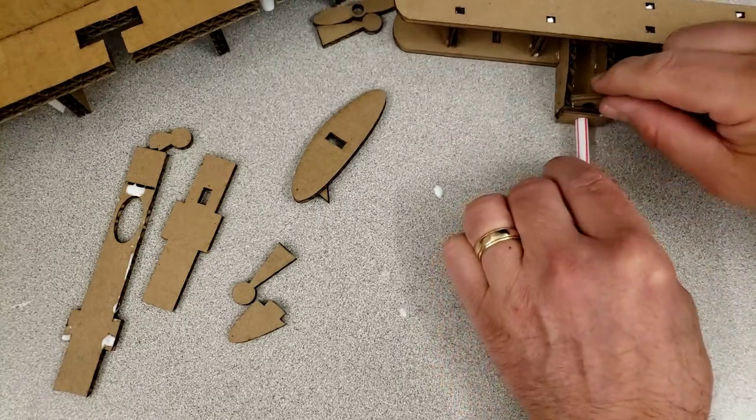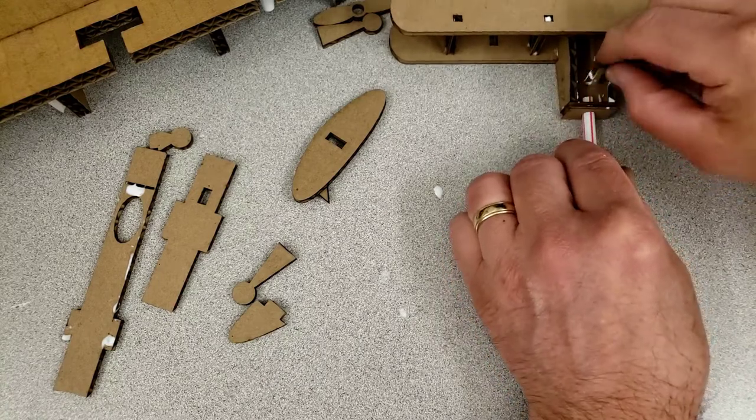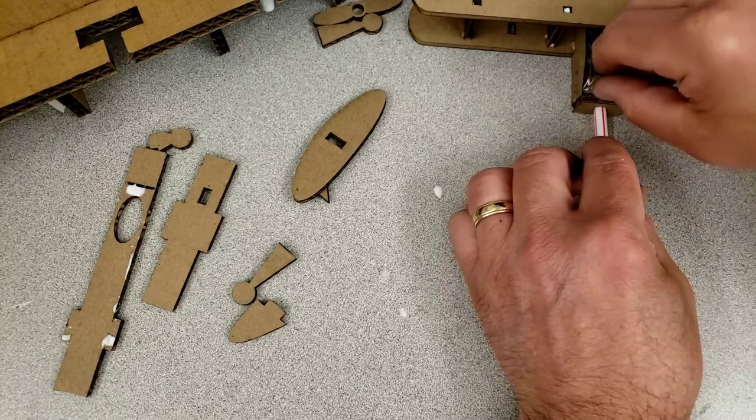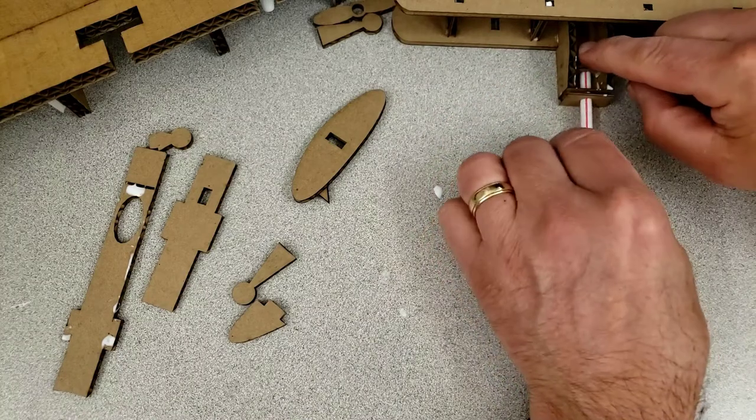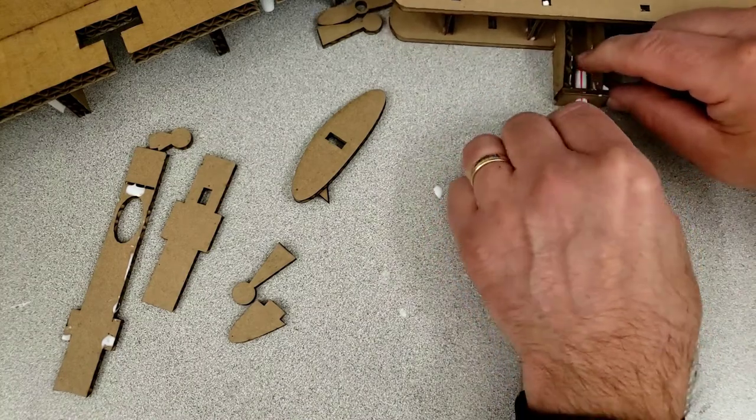And then when we push this in, the big chunk of cardboard is actually up. The smaller end should keep it lined up. Push that down in the groove and then your propeller should stick straight out.